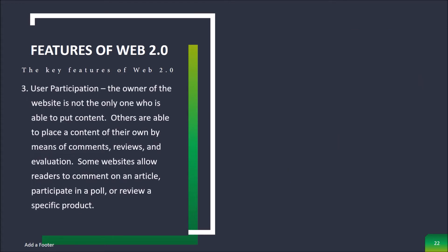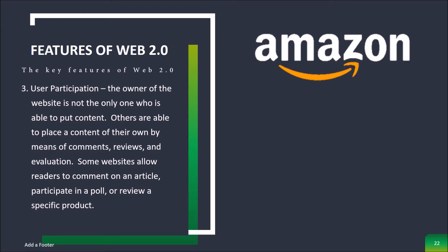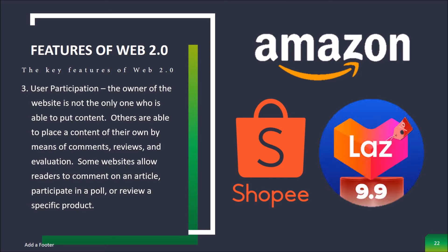Number three is User Participation. The owner of the website is not the only one able to put content; others are able to place content of their own by means of comments, reviews, and evaluation. Some websites allow readers to comment on an article, participate in a poll, or review a specific product — for example, Amazon.com, Shopee, and Lazada, and other online stores.